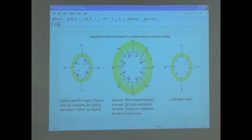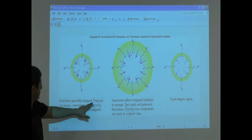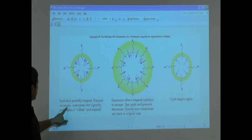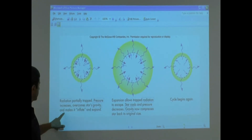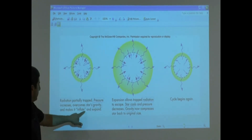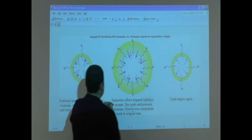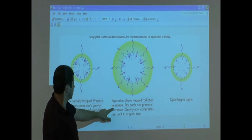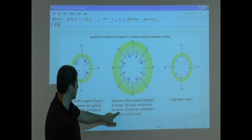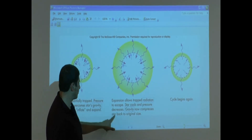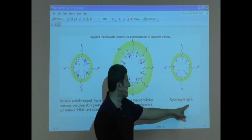This explains what causes stars to pulsate. Radiation is partially trapped, so pressure increases. When the radiation is trapped, the pressure overcomes the star's gravity and makes it inflate. The expansion then allows the trapped radiation to escape, the star cools, and pressure decreases. Gravity then compresses the star back to its original size, and the cycle begins again.